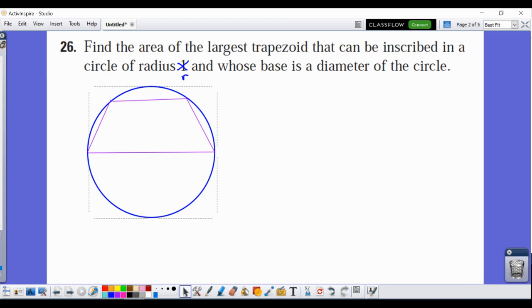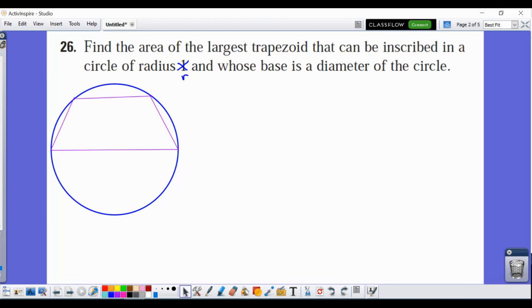First thing I want to do is identify your primary equation, the thing that you're trying to optimize. In this case, it's the area of the trapezoid, right? So we need to maximize that area.